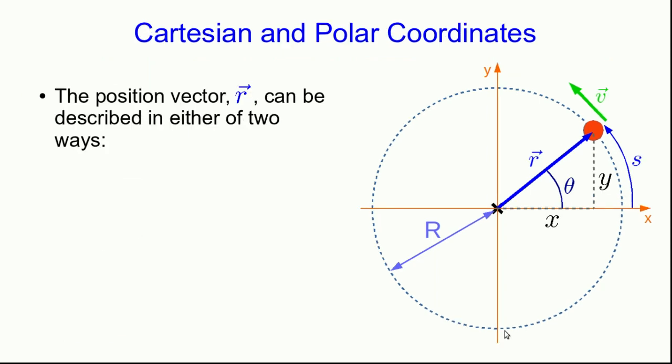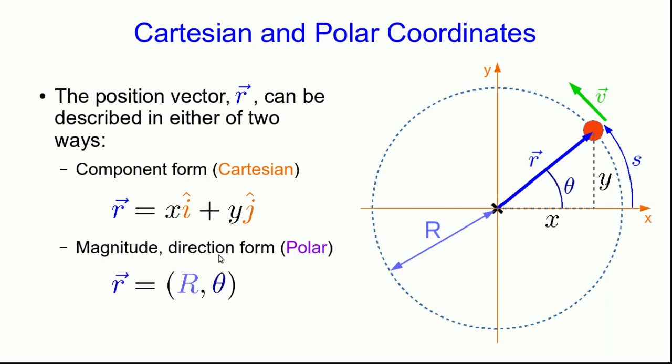Notice that this is actually the same as something we've already seen before. We've got a position vector r⃗ which is describing the location of the object relative to the origin. Like any vector, we can write it in two ways: in component form, which is Cartesian, r⃗ = xi + yj, or in magnitude direction form, which is also called polar form.